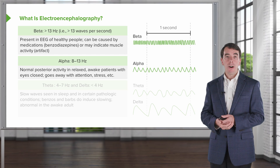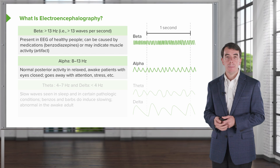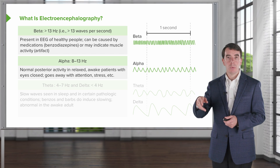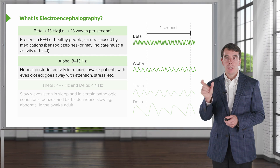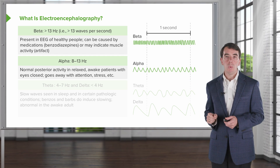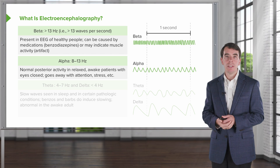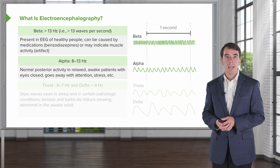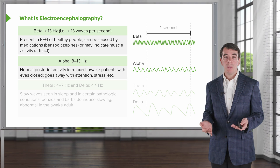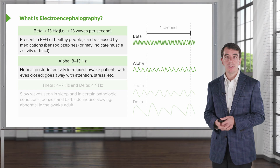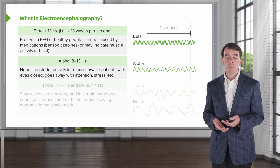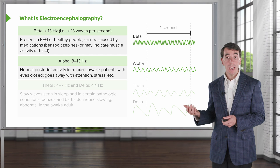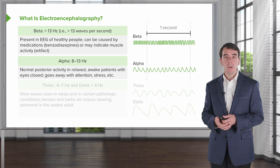Moving down in frequency, alpha frequency activity is typically in the range of 8 to 13 hertz — that's the number of wave bumps you count within one second on the EEG tracing. About 8 to 13 hertz is the alpha frequency. This is the normal posterior activity in a relaxed, awake person. It's present when their eyes are closed and goes away when they open their eyes, attend to something, or are under stress. When we're sitting with eyes closed and relaxed, the brain shows alpha activity — the posterior dominant rhythm.